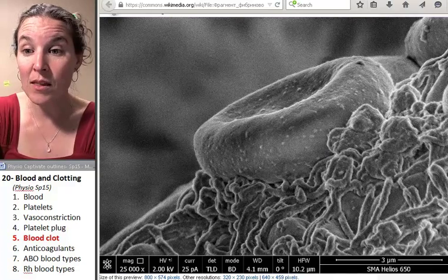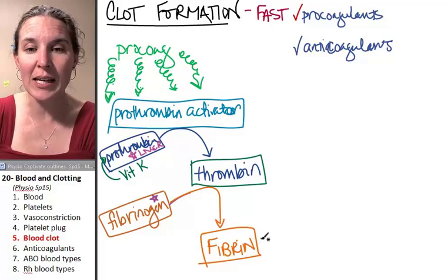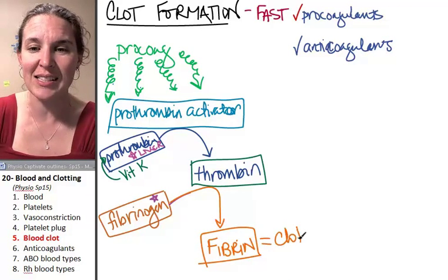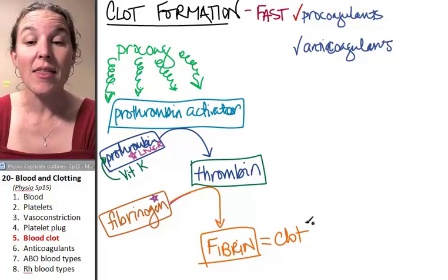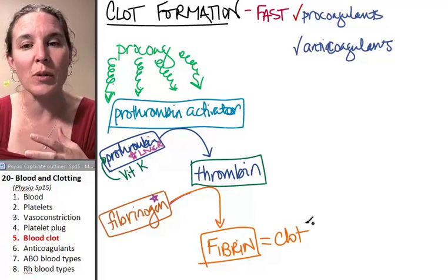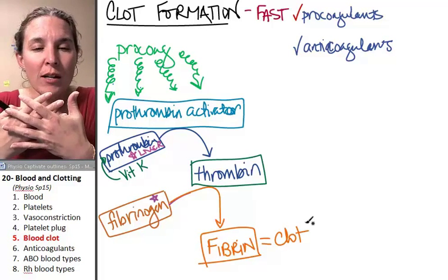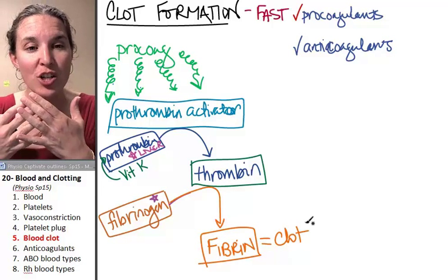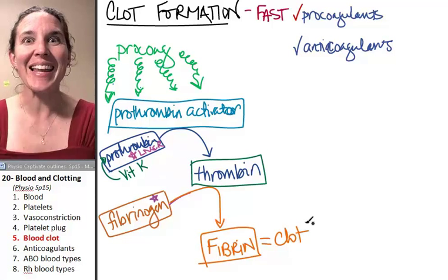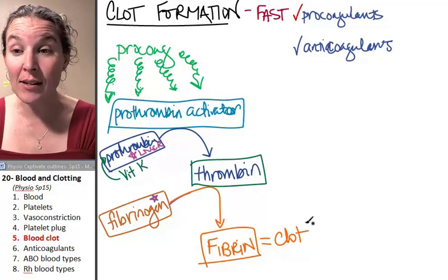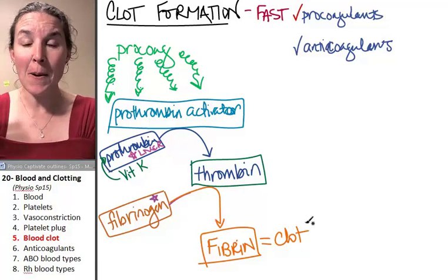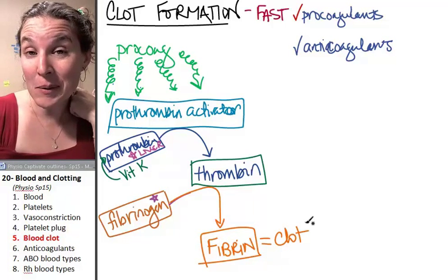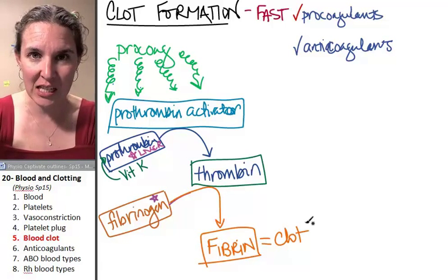Over time, the clot itself, the fibrin equals the clot. It's this sticky net that creates an actual blood clot. Fibrin, over time, after the clot has formed, it actually retracts. Platelets play a role in that. Platelets get all puffy and activated. They also have calcium in their endoplasmic reticulums, because they have some cell parts those platelets do.